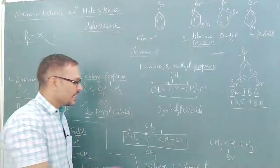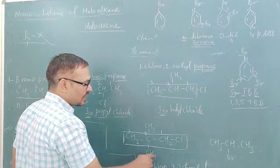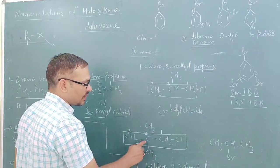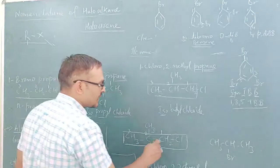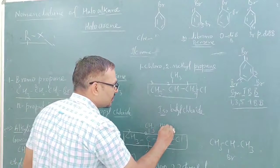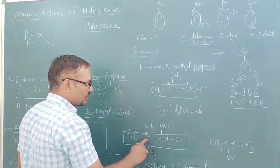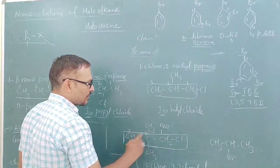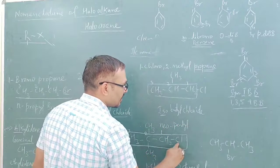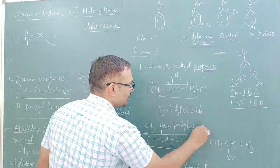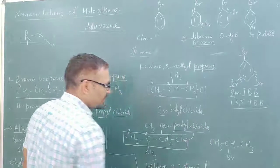For the common name, look at this carbon — it is attached with four other carbons, so quaternary carbon is present. When quaternary carbon is present, write 'neo' followed by total number of carbons. Carbon count: 1, 2, 3, 4, 5 — neo-pentyl. Chlorine is present, so common name is neo-pentyl chloride.